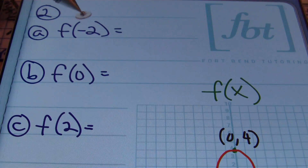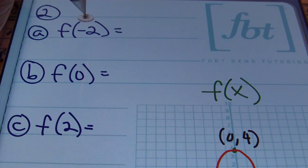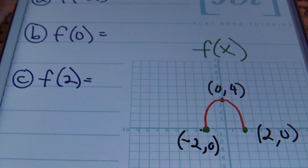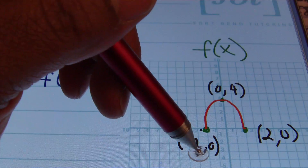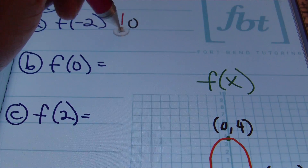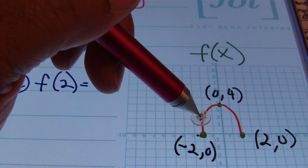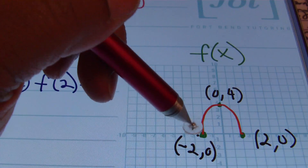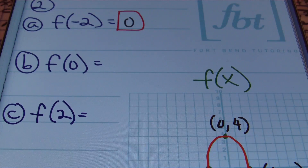Remember, your function notation is just a substitute for your variable y. Inside the parentheses, they're asking for the y value at the given x value, which is negative 2 in this case. At negative 2 on our graph, our y value is 0 — from the point negative 2, 0. So the y value when x is negative 2 is equivalent to 0. Along the graph, you find where x equals what's inside the parentheses and give them the y value.